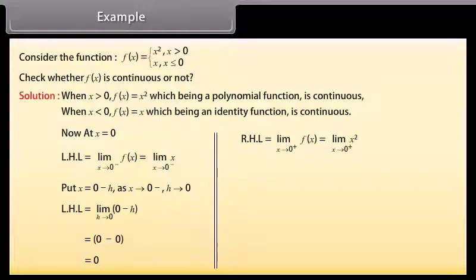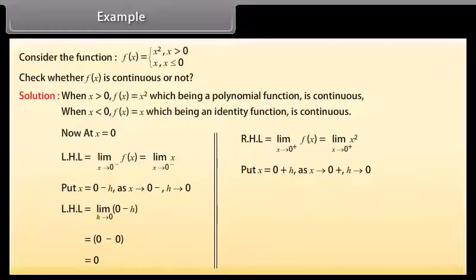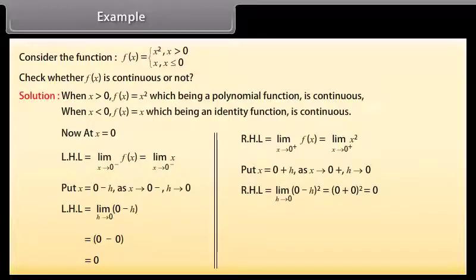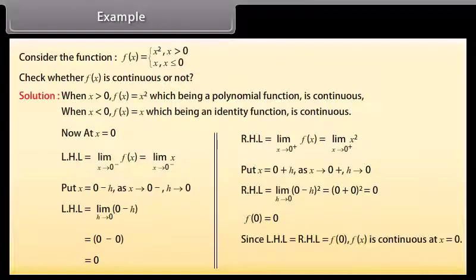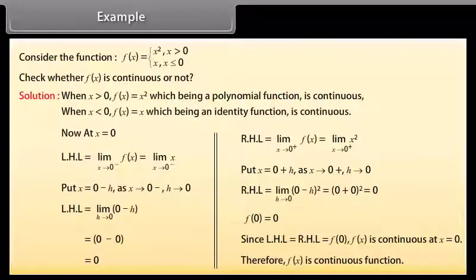Right-hand limit = limit x→0⁺ of f(x) = limit x→0⁺ of x². Put x = 0 + h; as x→0⁺, h→0. Right-hand limit = limit h→0 of (0 + h)² = 0² = 0. Now f(0) = 0. Since left-hand limit = right-hand limit = f(0), f(x) is continuous at x = 0. Therefore, f(x) is a continuous function.